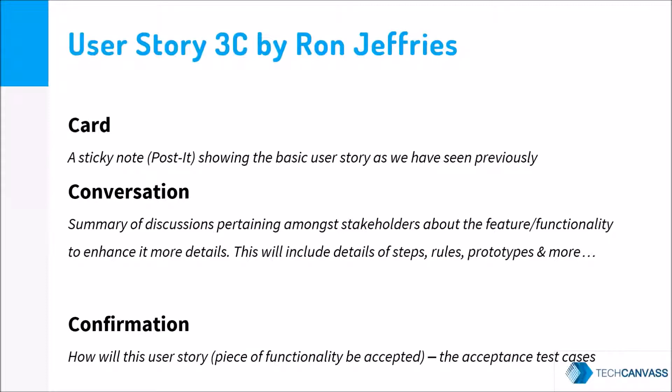This is the acceptance test criteria captured along with the user story, and all of that is done in the form of a card. On the front page of the card, we will have the basic user story written and the details of the conversation, which can be in the form of a prototype or a screen with the details of the fields. On the back side, we will write different acceptance criteria or acceptance test cases.